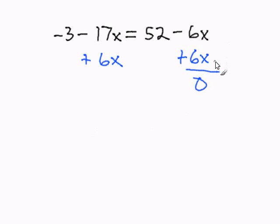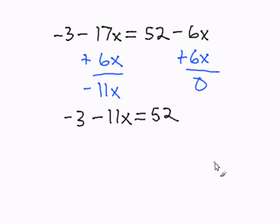The negative 6x plus 6x cancels out to zero. And negative 17x plus 6x, I'm going to get negative 11x. Now I'm going to rewrite my equation. Negative 3 minus 11x equals 52.